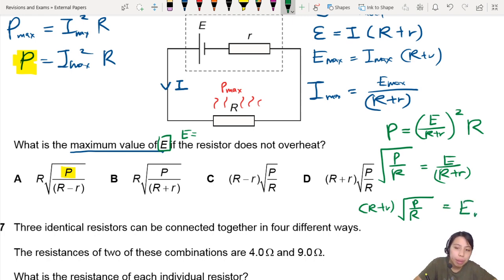So this will be my maximum EMF, which will give the maximum current, which will give the maximum power. So let's see. What's the equation? R plus r, square root of P over R, D. So the best choice here is D.